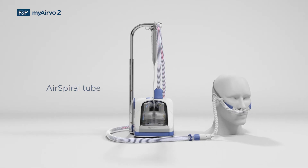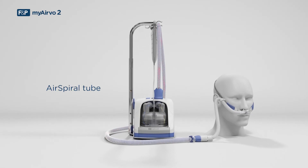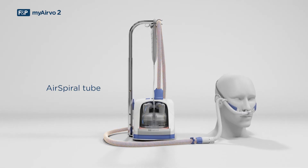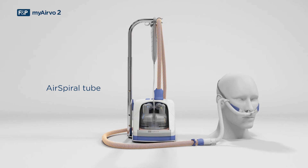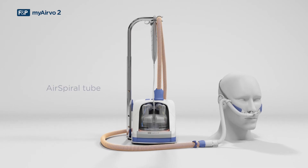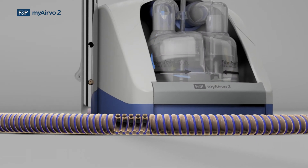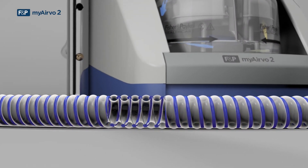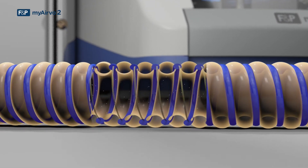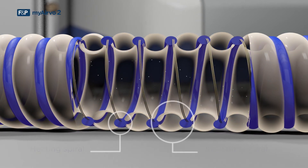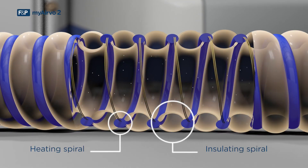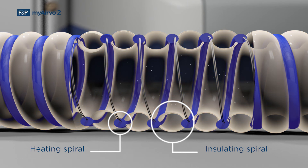The air spiral tube ensures the humidified air is protected from the cold outside environment with insulated pockets of air surrounded by heating wires. This ensures the gas reaches the patient without losing humidity to condensation.